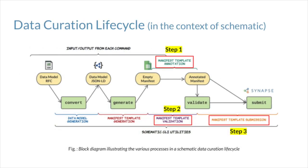In the context of Schematic, there are three main steps that are part of a typical biomedical data curation lifecycle: annotation, validation, and submission of metadata. First, some background as to why annotation is important. Experimental data is typically annotated by the biologist or researcher responsible for running an assay. Different researchers may annotate data from the same assay differently, and this lack of standardization can cause problems creating downstream QC pipelines, visualizations, dashboards, etc.